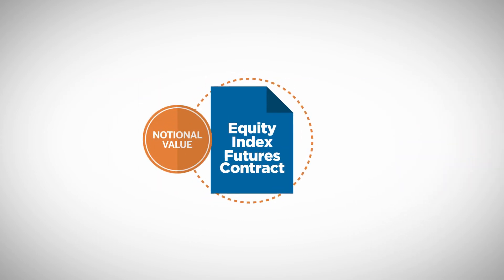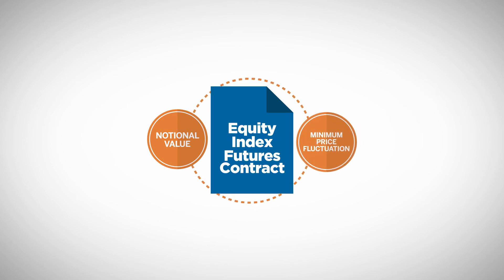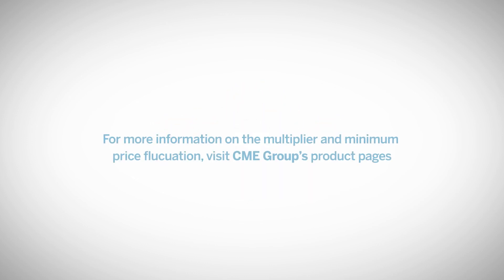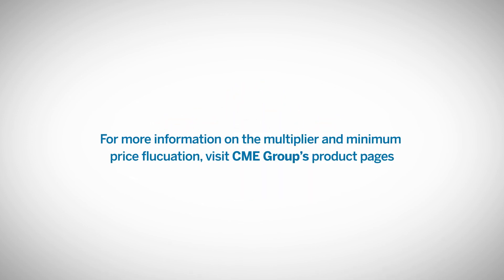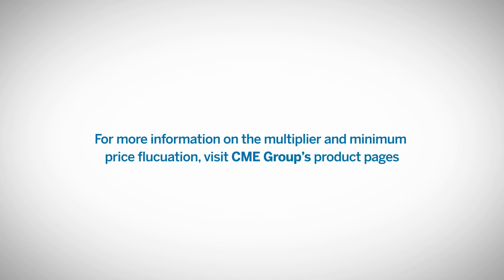Understanding the notional value of an Equity Index Futures contract and the minimum price fluctuation gives traders the information they need to identify financial value for each contract and measure the cost for each tick movement in price. For more information on the multiplier and minimum price fluctuation, please visit the CME Group product specification pages.